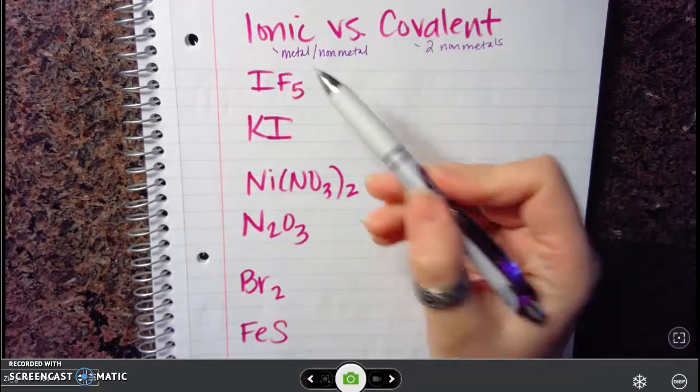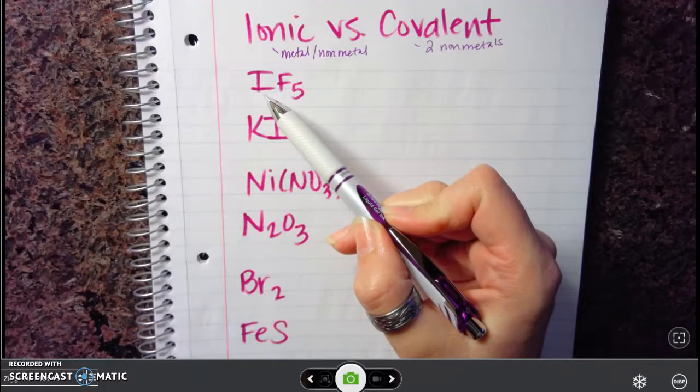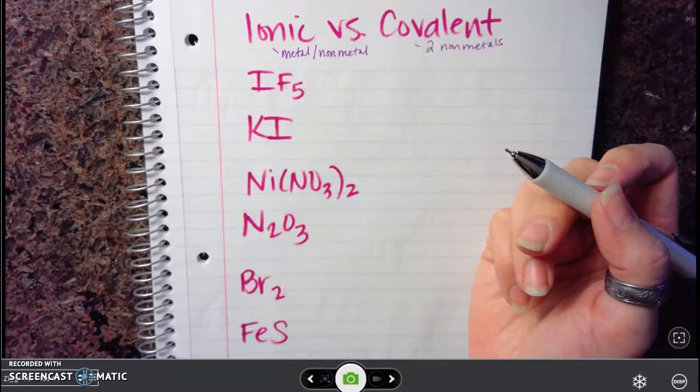So when you're trying to identify if something is ionic or covalent, the easiest thing to do is to look at the first element. When you look at the first element, you want to see is it a metal or a non-metal.